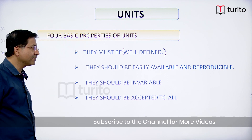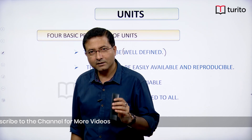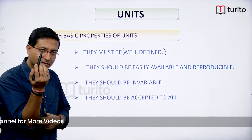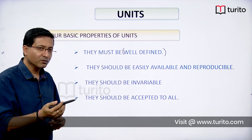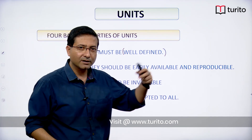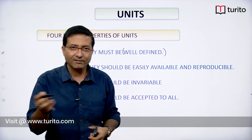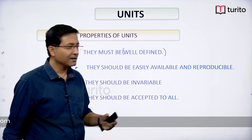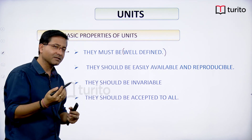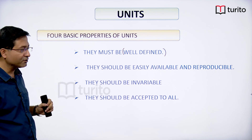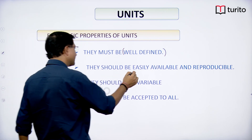The second requirement is that units should be easily available and reproducible. If you say to take your hand as a standard, your hand cannot be easily available everywhere. If someone in America wants to measure a length, they cannot use your hand. So your hand does not qualify as a standard because it is not easily available everywhere and not reproducible. The standard we use must be easily reproducible anywhere.